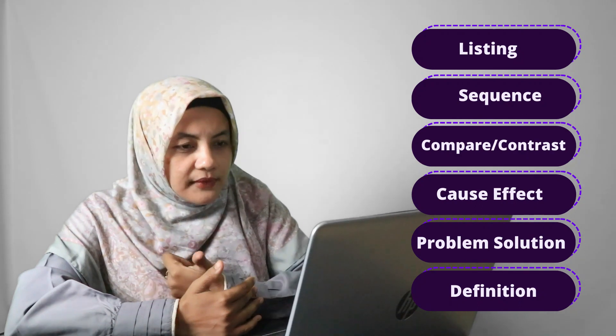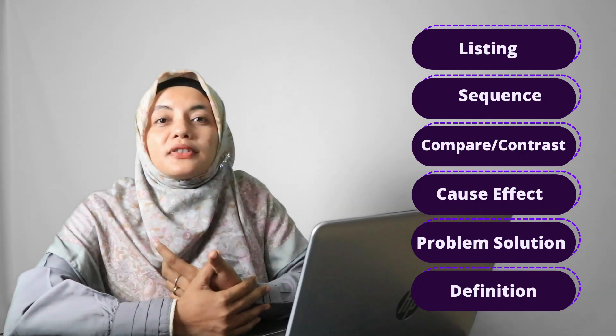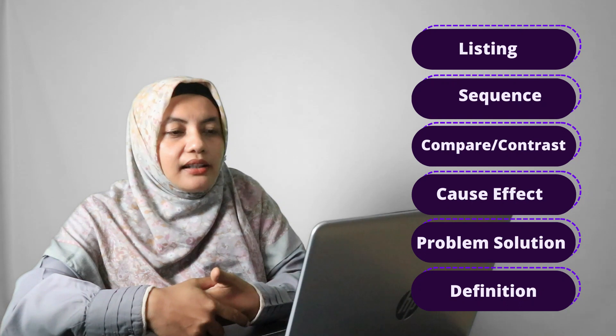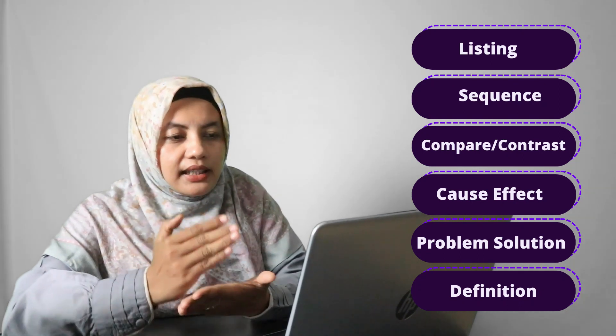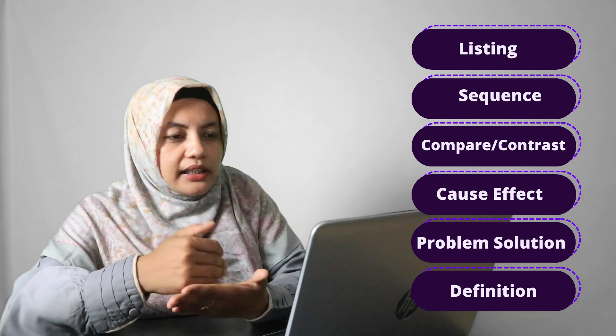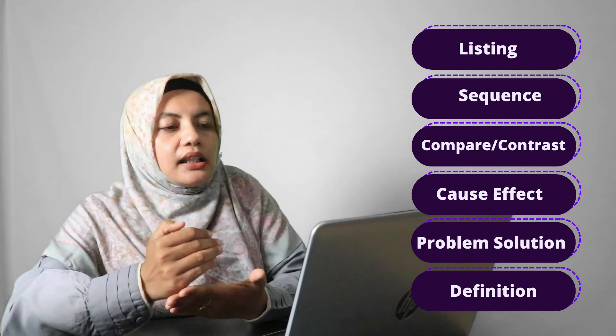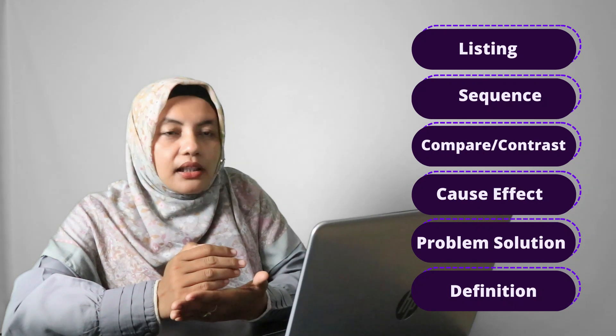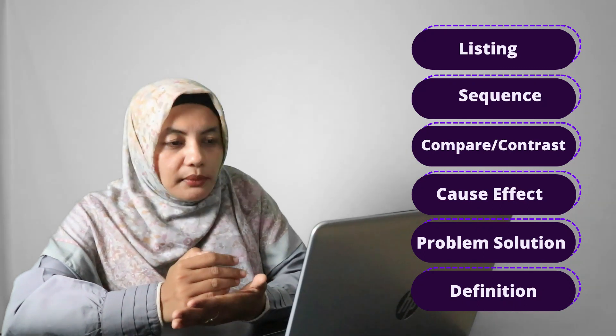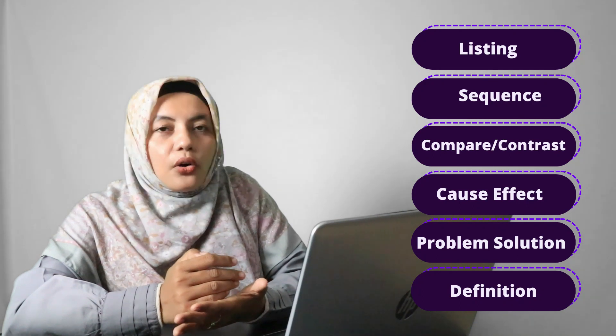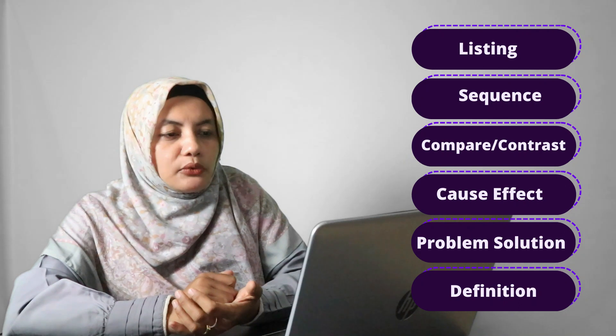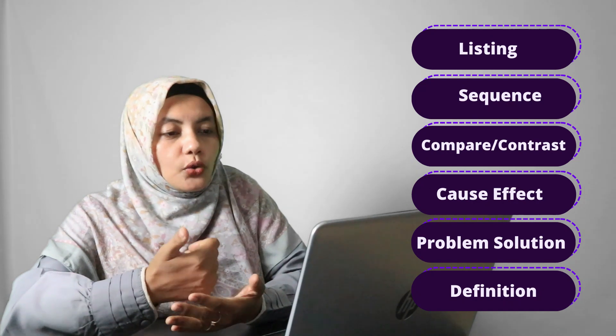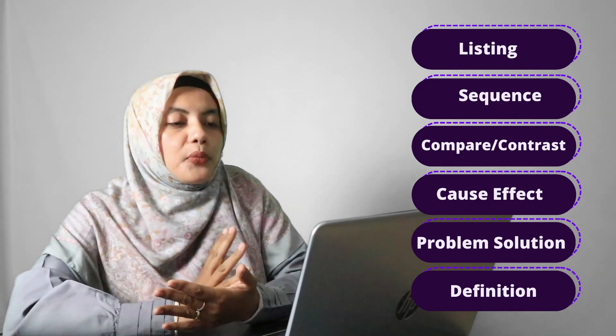Next is problem solution, which is related to problems and their solutions. Usually this text has keywords in the main idea, but does not use signal words for the detail part. The keywords are like situation, and in the body of the program, keywords include solve, solution, result.